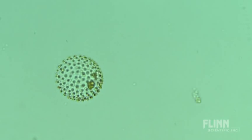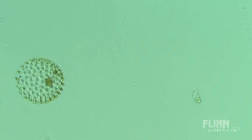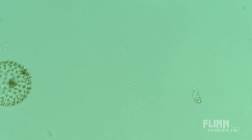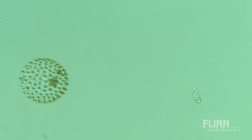When students find the volvox, often there will be daughter cells inside of it, small colonies just starting out. Those daughters can be either sexual or asexual products of reproduction.